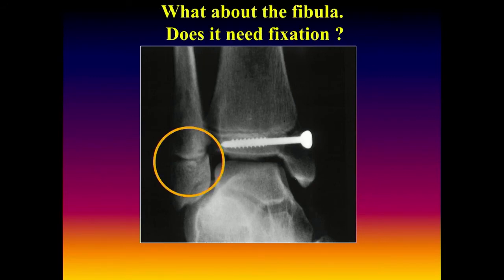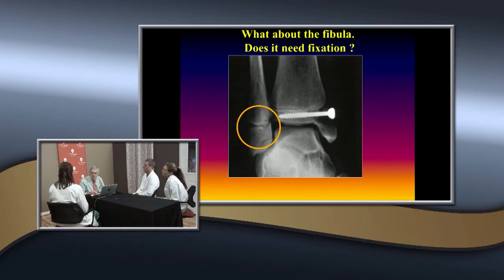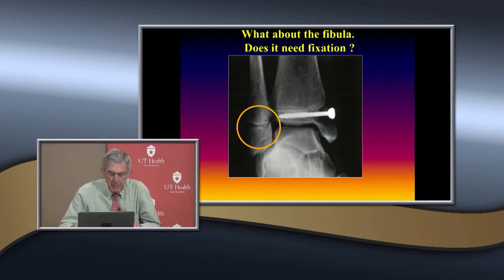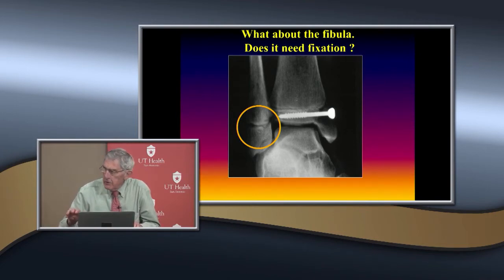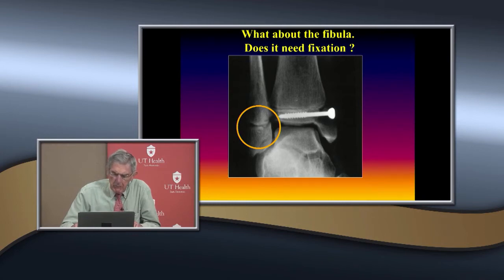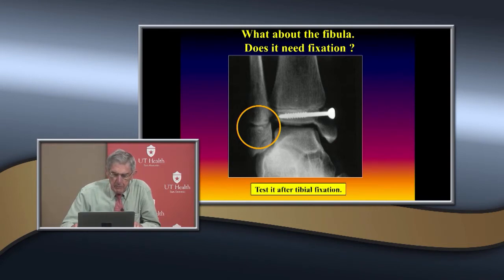Regarding fibular fixation: after stabilizing the tibia with a screw, stress test the fibula. In most experience, once you stabilize the tibia the fibula doesn't move, and rarely requires additional fixation. If the fibula is unstable after tibial fixation, then provide some form of auxiliary fixation. Always test stability after tibial fixation before deciding.